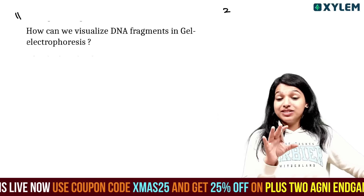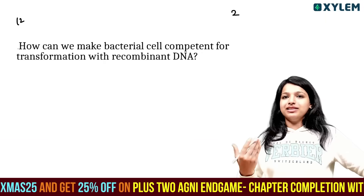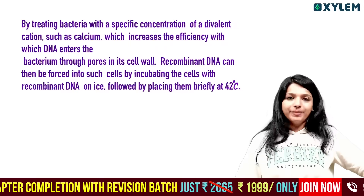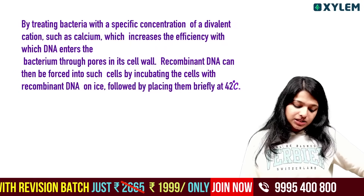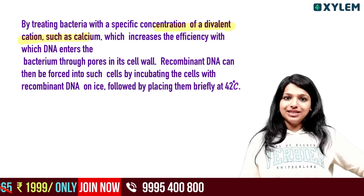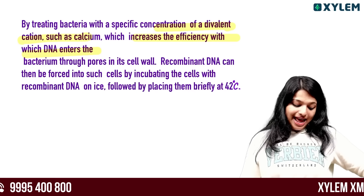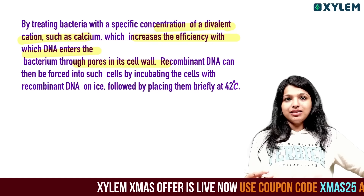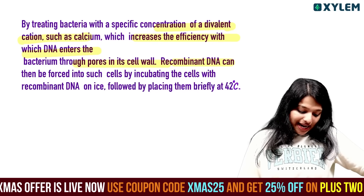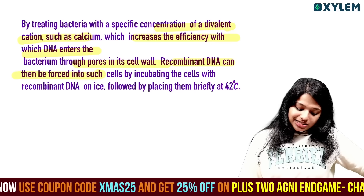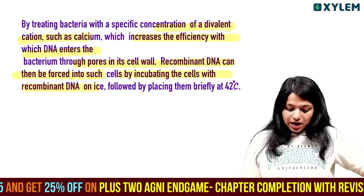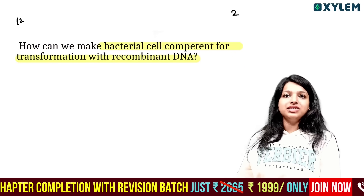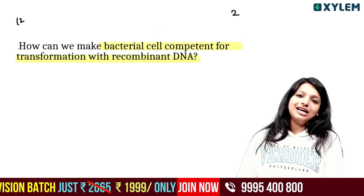To visualize DNA fragments in gel electrophoresis, ethidium bromide is used as a stain and the gel is exposed to UV light. To make bacterial cells competent for transformation with recombinant DNA, treat with a specific concentration of divalent cation such as calcium to increase efficiency. The recombinant DNA is then forced into the cell by incubating on ice followed by placing at 42 degrees Celsius - this is called heat shock transformation.